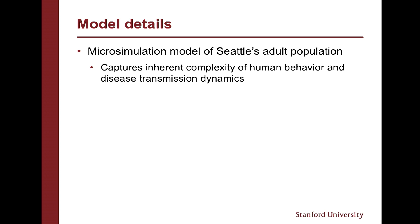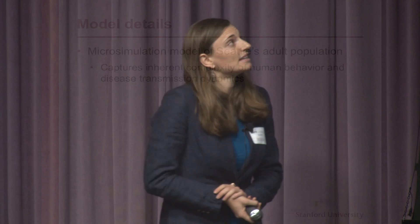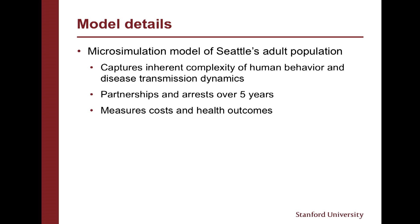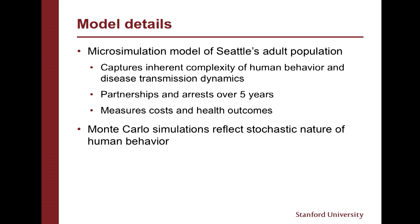Although we might have some intuition, a priori it's really hard to give quantitative answers to those questions because this is a really complex system — there's the complexity of human behavior and choices, and very complex disease transmission dynamics. So what we really need to do to move beyond our intuition is build a model — and that's precisely what we intend to do. We're going to simulate Seattle's adult population, tracking both partnerships and arrests over five years, and measure the cost and health outcomes both with a LEAD program and in the absence of it, using Monte Carlo simulation to introduce randomness and better reflect the randomness of human behavior. The model is being programmed in Python.